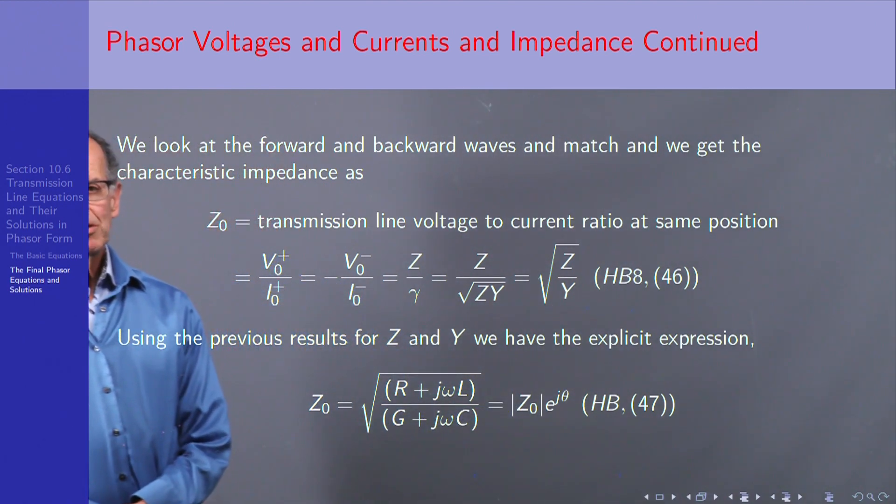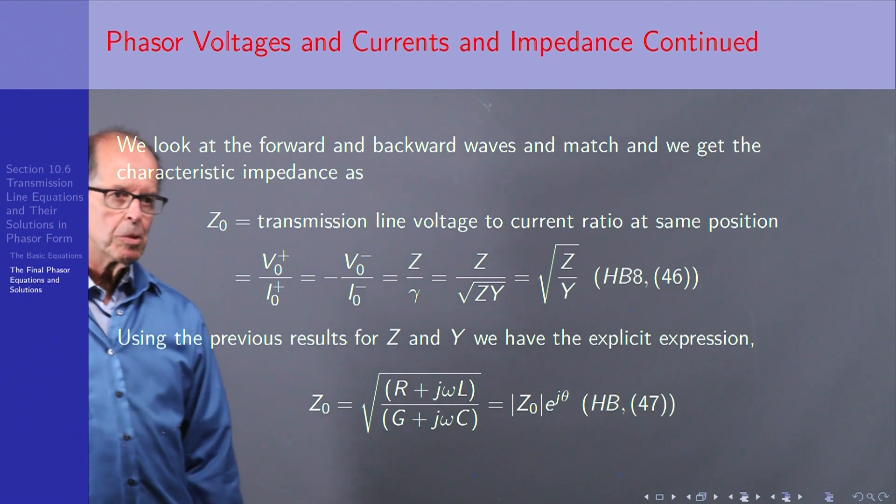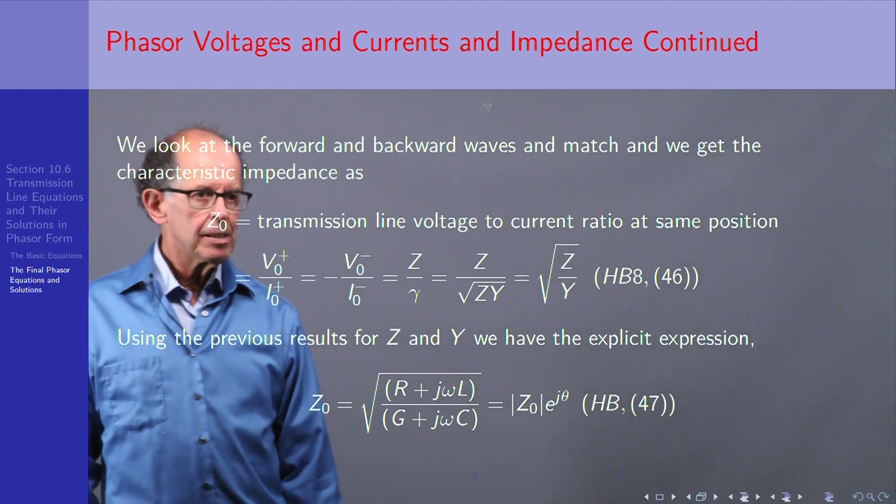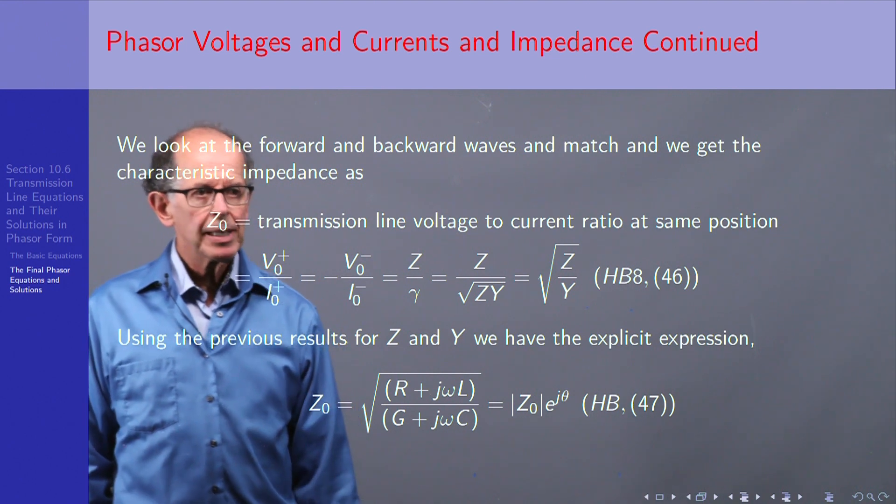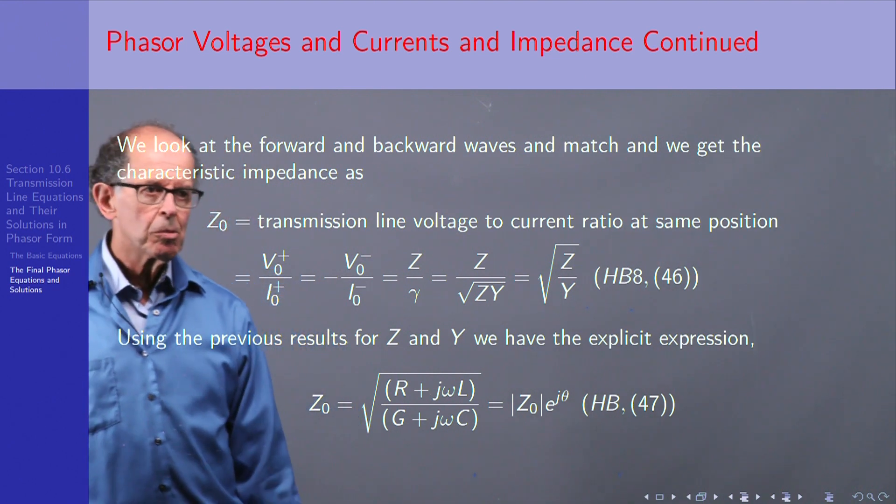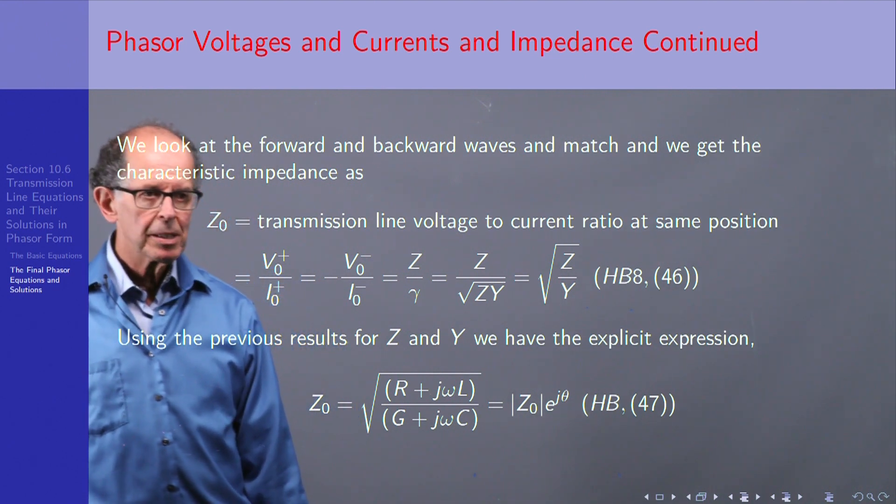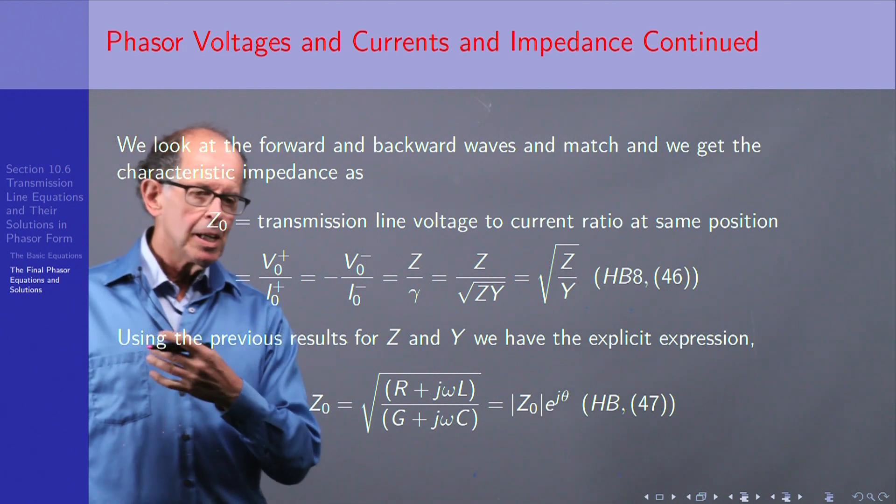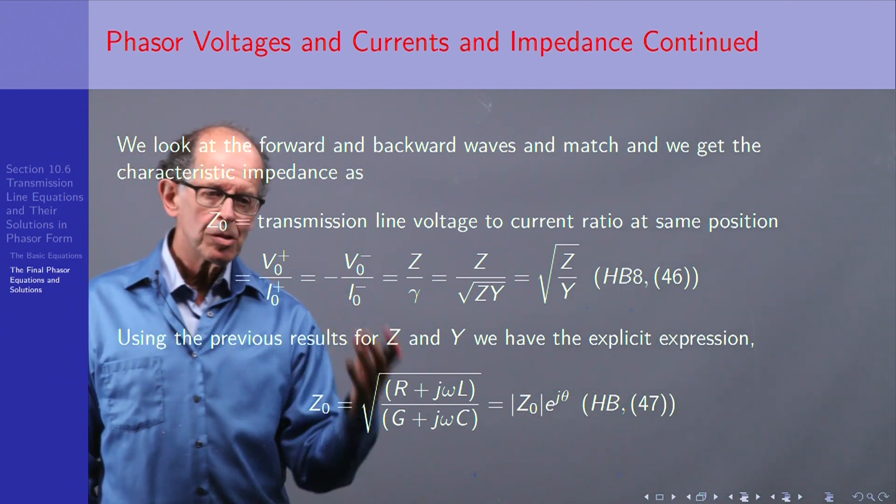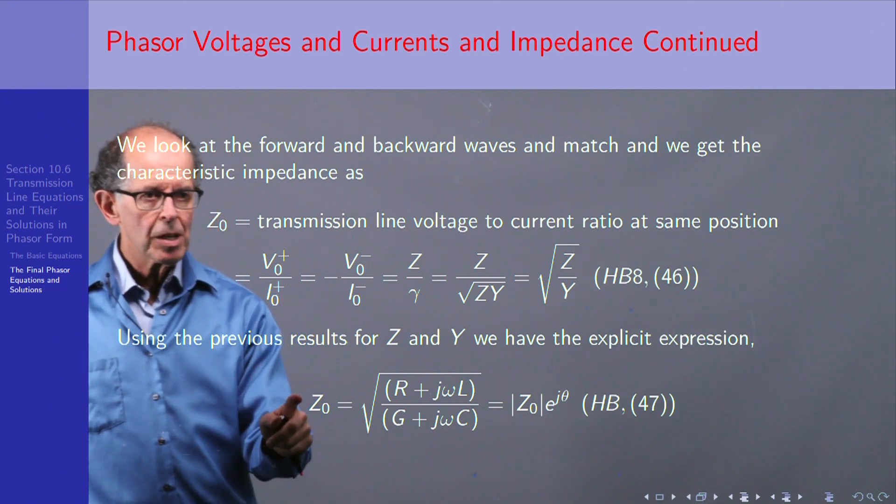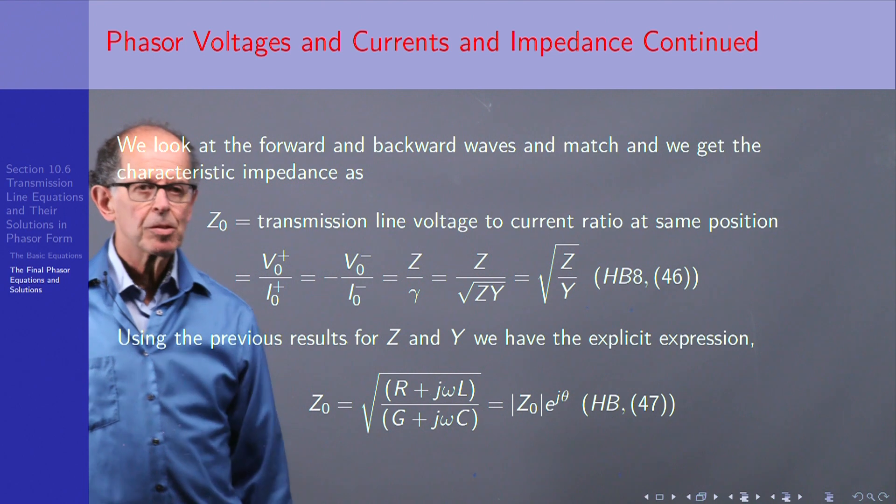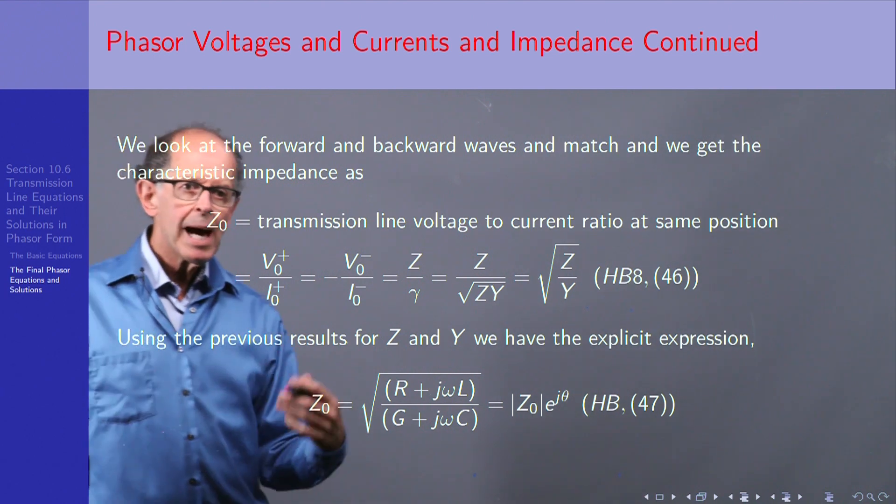Using the previous results for Z, which was R + jωL, and for the admittance Y, G + jωC, so if you think of it as series impedance and shunt admittance, their ratio square rooted gives us the final result, Z₀.